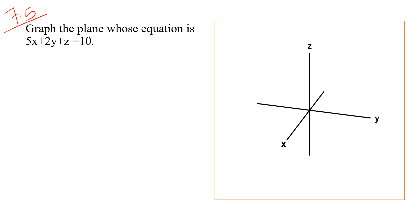Hi guys, this video is the last video on section 7.5. Here we are given an equation and we need to find the graph of the equation — the graph of the plane. So we need to graph it, and to do that we'll need to find the intercepts.